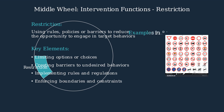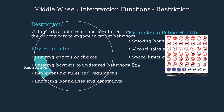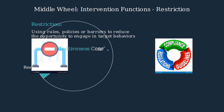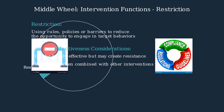Restriction is commonly used in public health interventions. Examples include smoking bans, age restrictions for alcohol, speed limits, and controlling access to medications. While restriction can be highly effective, it's important to consider that it may create resistance. It works best when combined with other interventions and requires proper monitoring and enforcement.